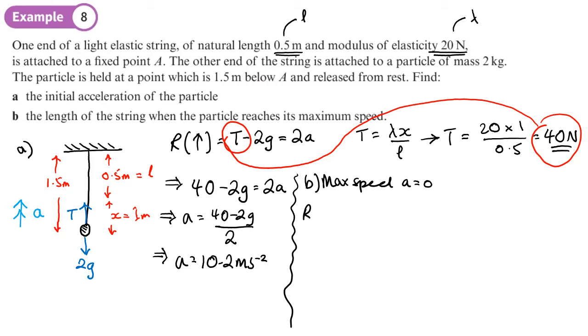What we will have, well you could have F equals ma, you just have T minus 2g equals 0. In other words, T will equal 2g.